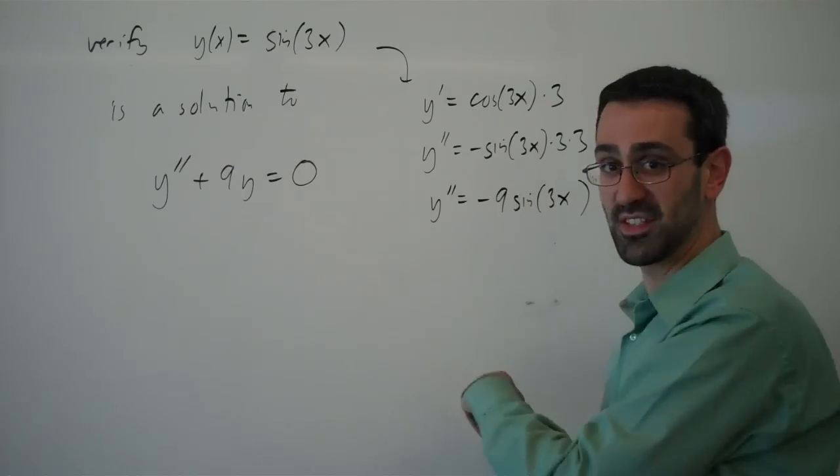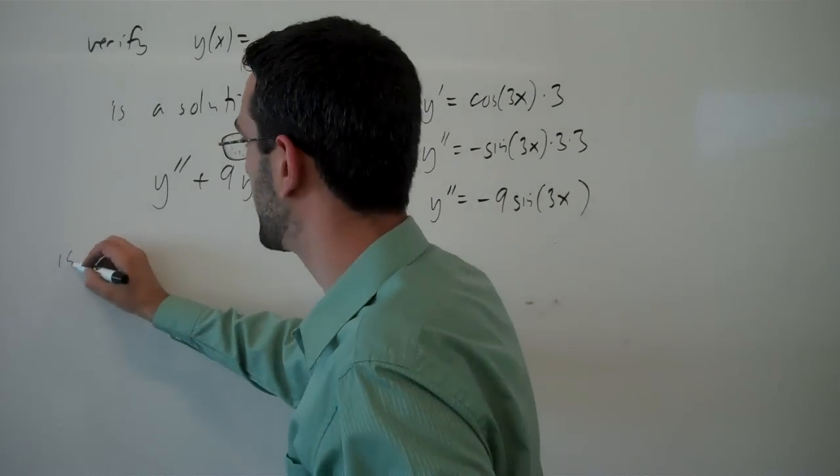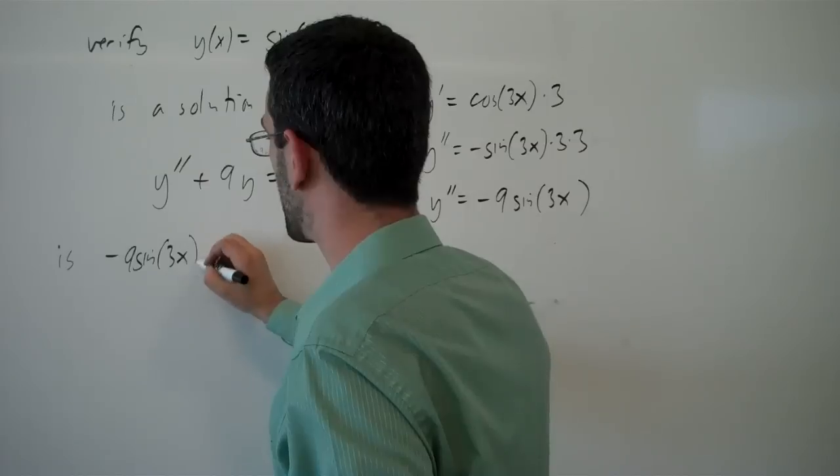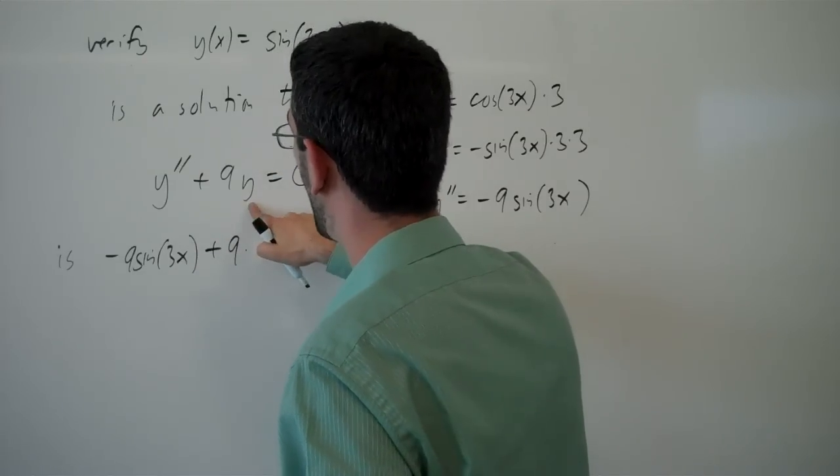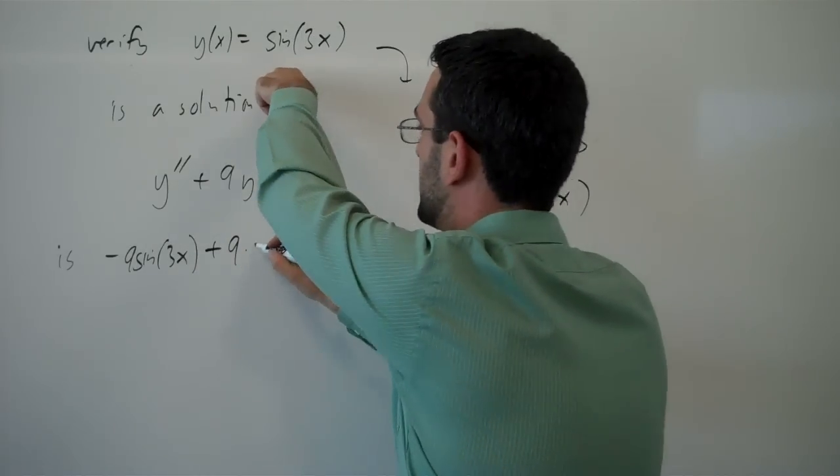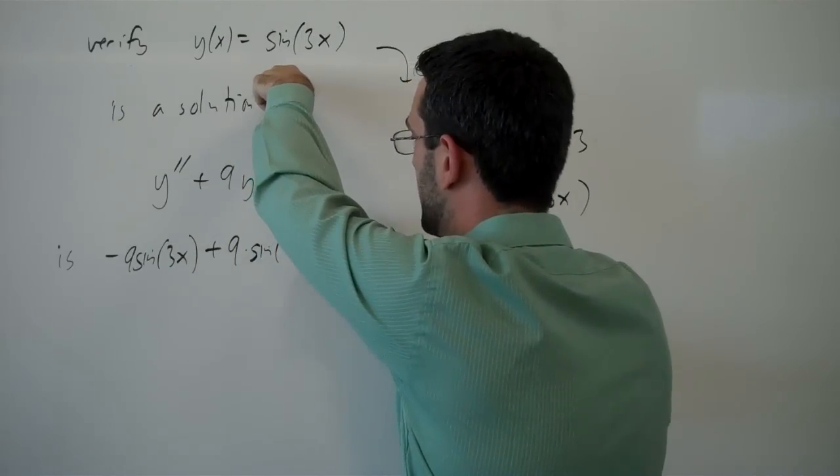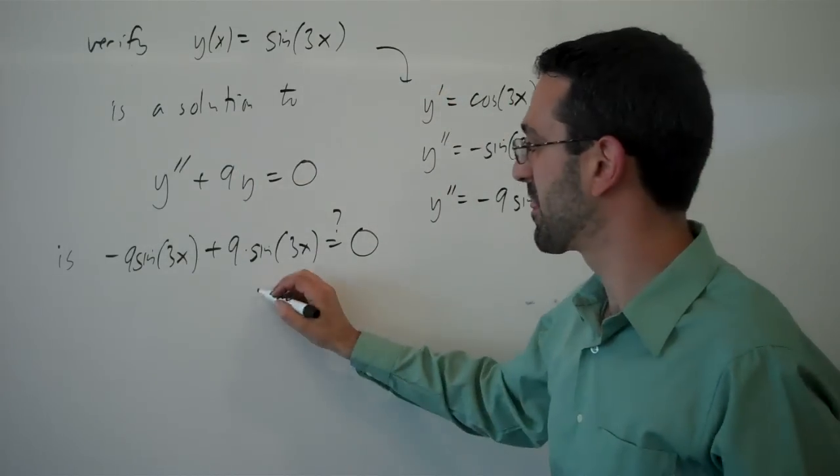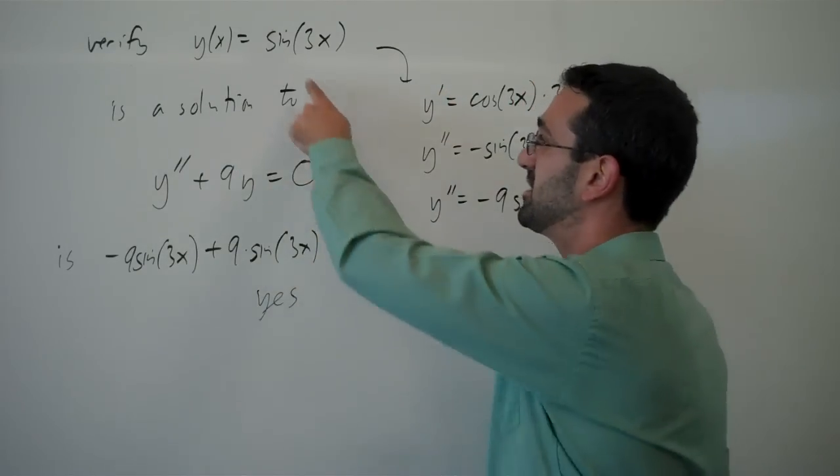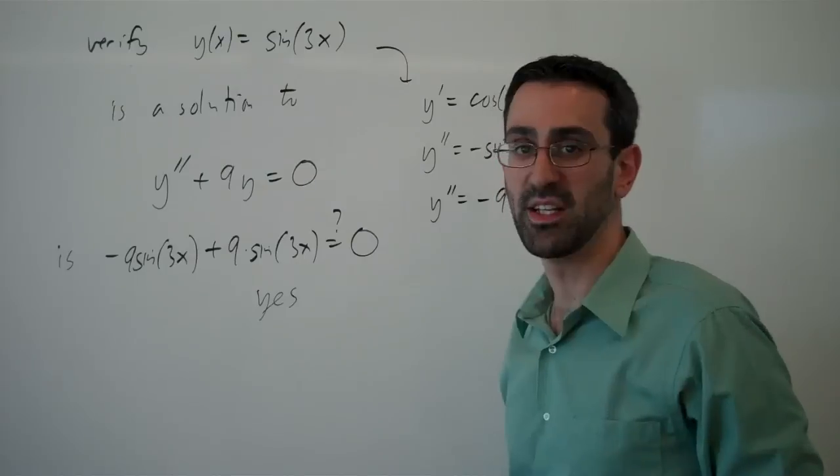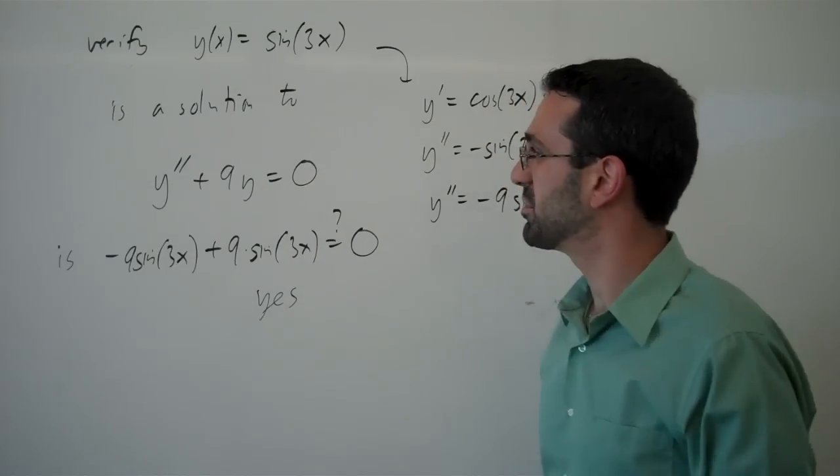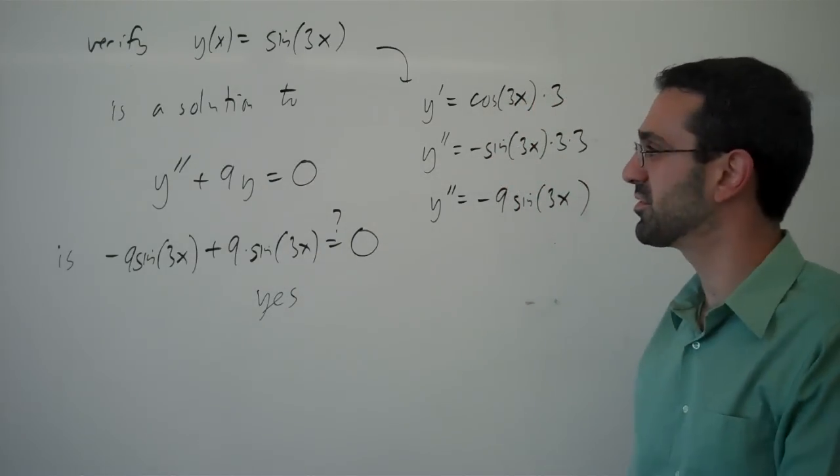So, let's plug this in and see if it satisfies the equation. So, we're asking, is -9sin(3x) plus 9 times y... Y was sin(3x). Is that equal to 0? Yes. So, this is, in fact, a solution to the differential equation. Okay? And so, this is an example of verifying a solution to a differential equation.